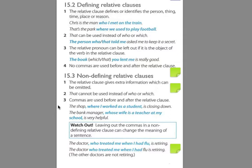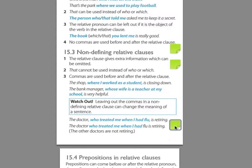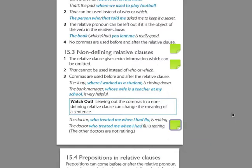Now sometimes you have to make a judgment call, and this really boils down to one thing: have you talked about the person or not? The doctor who treated me when I had the flu is retiring. There, obviously, we've talked about the doctor — it shows that it's extra information and we know which doctor. In the second example, however, we really haven't established which doctor it is, so we need to really specify. The doctor who treated me when I had the flu is retiring — the other doctors are not retiring, or we really need to show which one in particular is retiring.